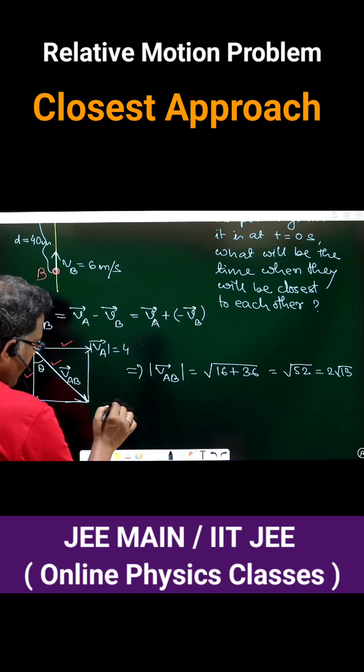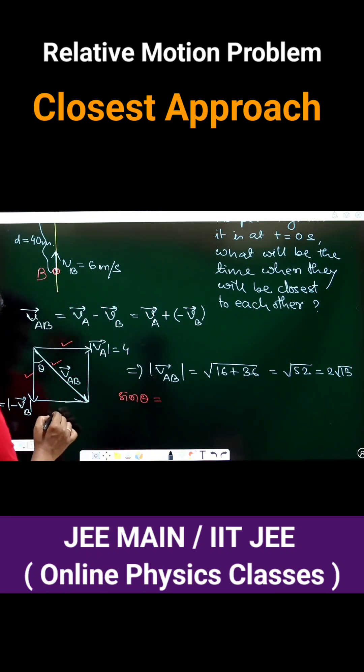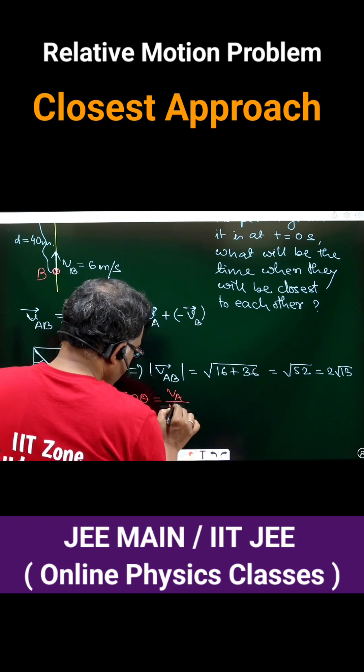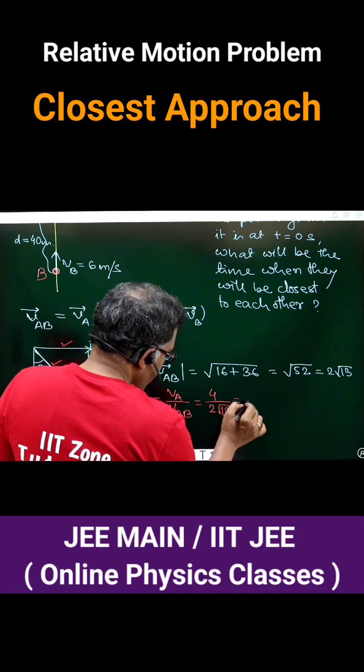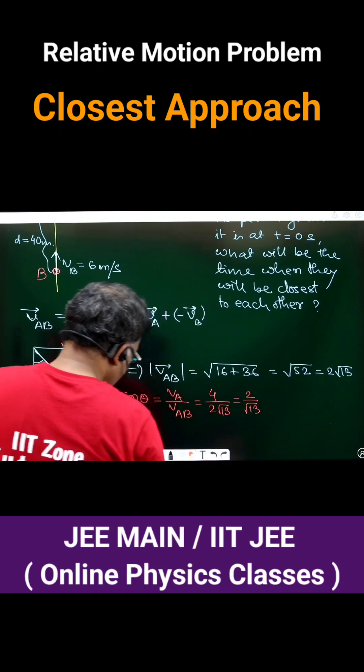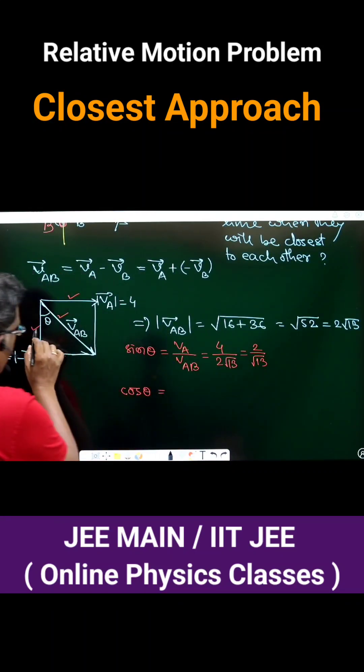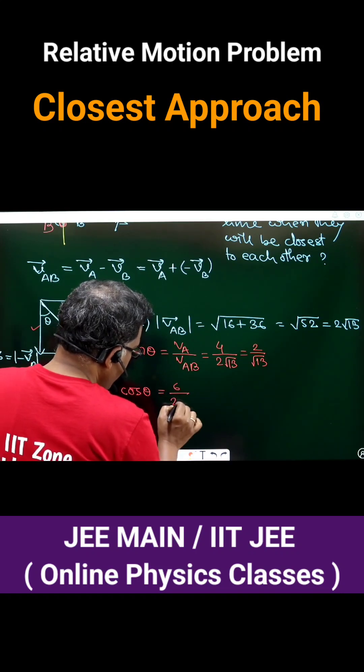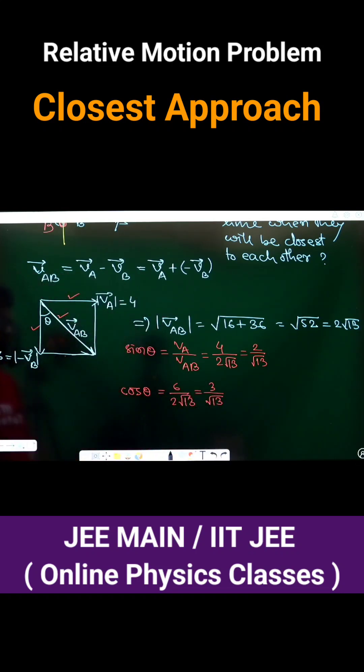Based on these three known sides in this triangle, we can get the numerical value of sine of this angle theta. Sine theta can be written as VA by VAB. VA is 4, VAB is 2 root 13, so it's 2 by root 13. Similarly, cos theta will be base to hypotenuse, that is 6 by 2 root 13, which is 3 by root 13.